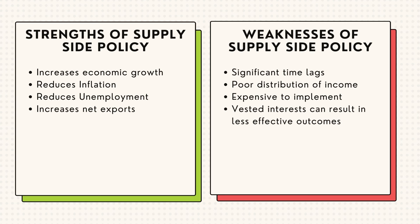Supply-side policy also has its weaknesses. For example, time lags, poor distribution of income, it can be expensive to implement and vested interest can also result in less effective outcomes.